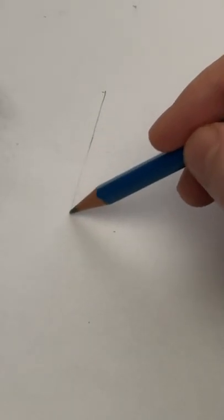This is the easiest way to draw a realistic nose. Let's start with a triangle. Add an upside down triangle and a circle at the bottom of that.